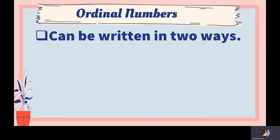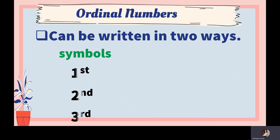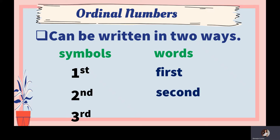Ordinal numbers can be written in two ways. First, in symbols — as we just discussed: 1ST, 2ND, 3RD for first, second, third. They can also be written in word form. For example, 'first' is spelled F-I-R-S-T, 'second' is S-E-C-O-N-D, and 'third' is T-H-I-R-D. So we have the symbol form and the word form.